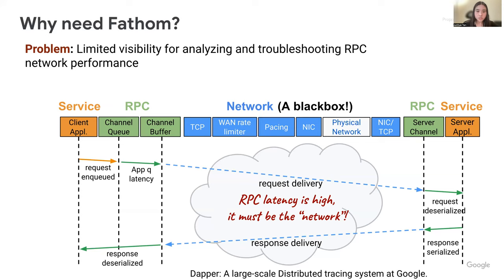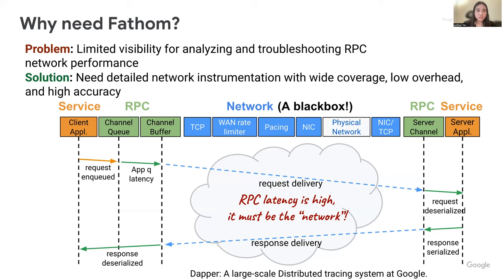To address this problem, we've developed Fathom, a detailed network instrumentation system with wide coverage, no operational overhead, and higher accuracy. Deployed for over five years, Fathom has become Google's primary tool for troubleshooting RPC network issues and evaluating the impact of network infrastructure changes.